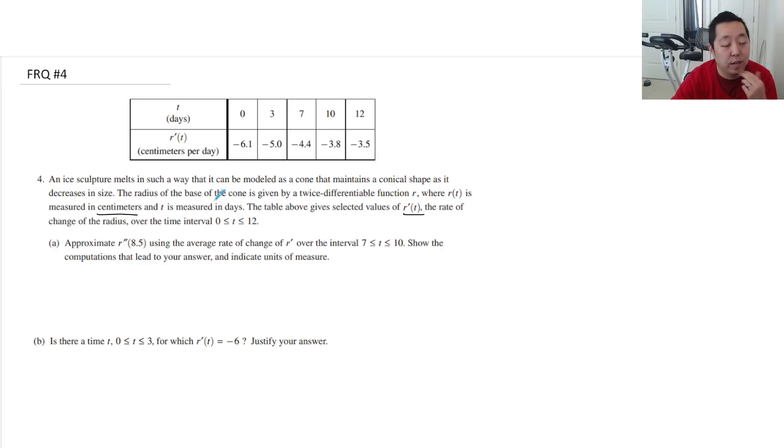Approximate r''(8.5). So that's the derivative of this. 8.5 is over the interval 7 to 10, show the computation. So 8.5 is halfway between here and here. So I'm going to say r''(8.5) is approximately equal to r'(10) minus r'(7) over 10 minus 7, because that's like a secant line slope.